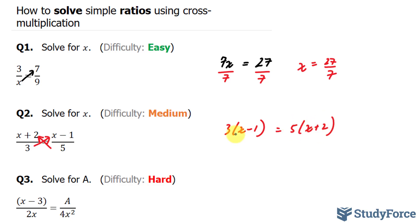On the left side of this equation now, we have 3 times this binomial x minus 1. So we'll multiply 3 times x, that gives us 3x, and 3 times negative 1 is negative 3. Similarly, 5 times x is 5x, and 5 times 2 is 10.